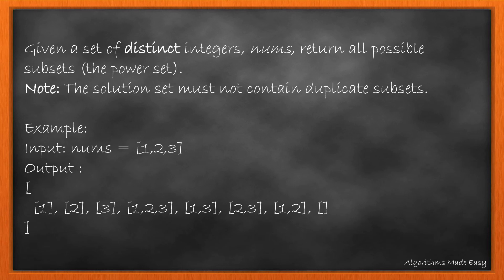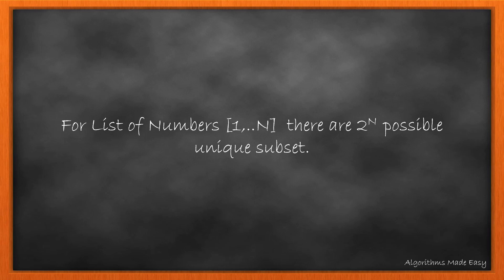Given a set of distinct integers nums, return all the possible subsets, the power sets. Note that the solution set must not contain duplicate subsets. For the example given, the output contains 8 possible subsets. For a given list of numbers 1 to n, there are in total 2 raised to n possible unique subsets.